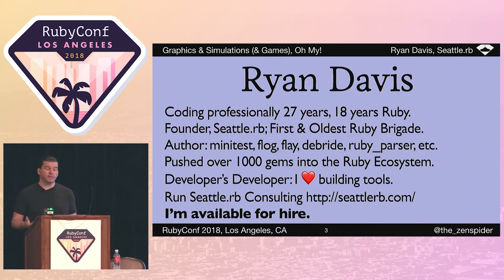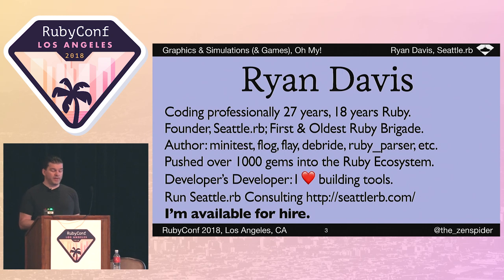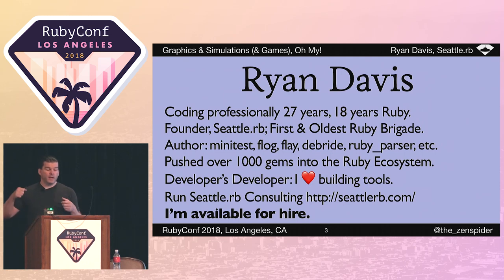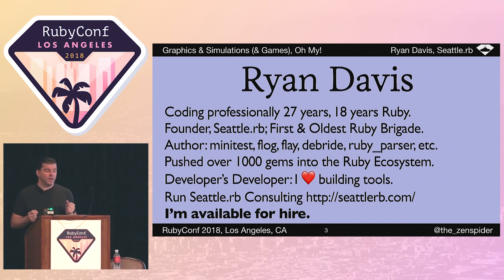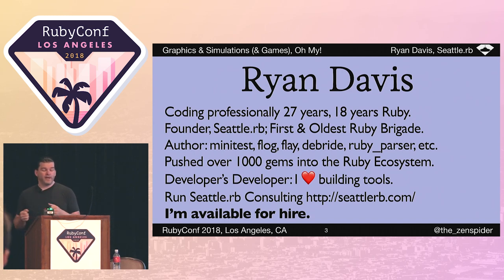A little bit about me: I've been coding professionally for a long time, 18 of those years in Ruby. I'm the founder of Seattle.RB, the first and oldest Ruby brigade in the world. I'm the author of Minitest, Flog, Flay, Ruby Parser, and a whole lot of other gems. I figured out this year that I've pushed over 1,000 gems into the Ruby ecosystem. I'm a developer's developer — I really like building tools. I run CLRB consulting at CLRB.com.